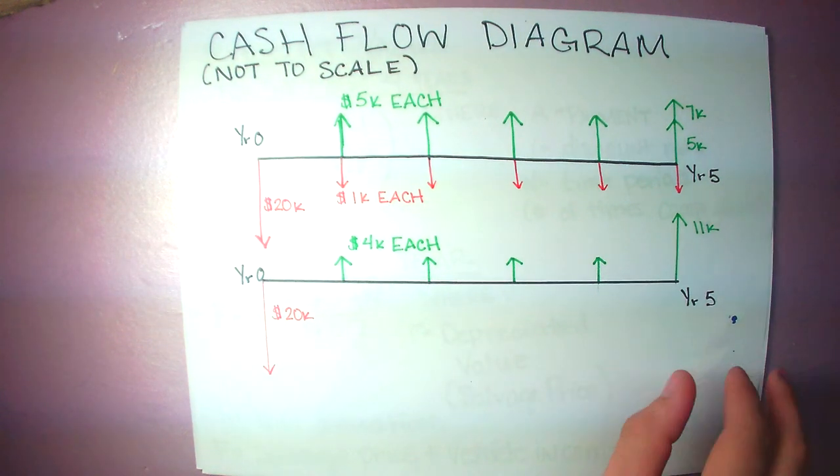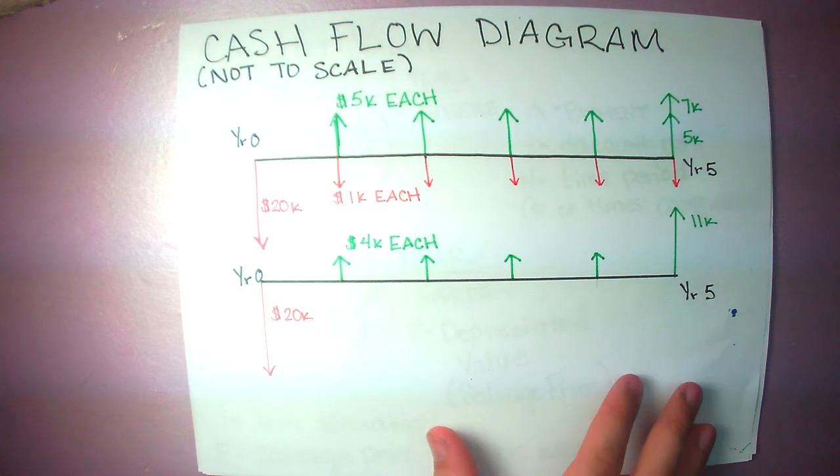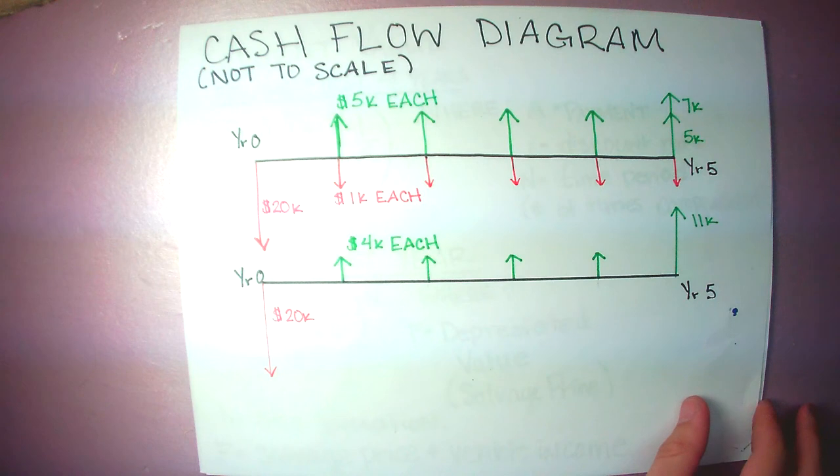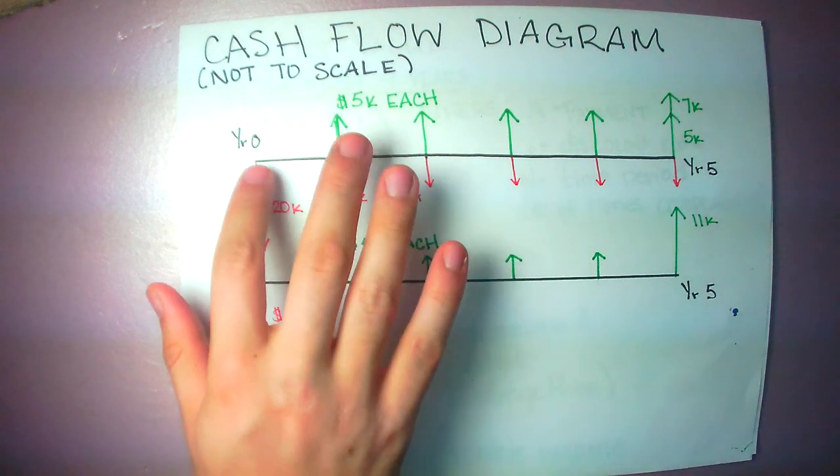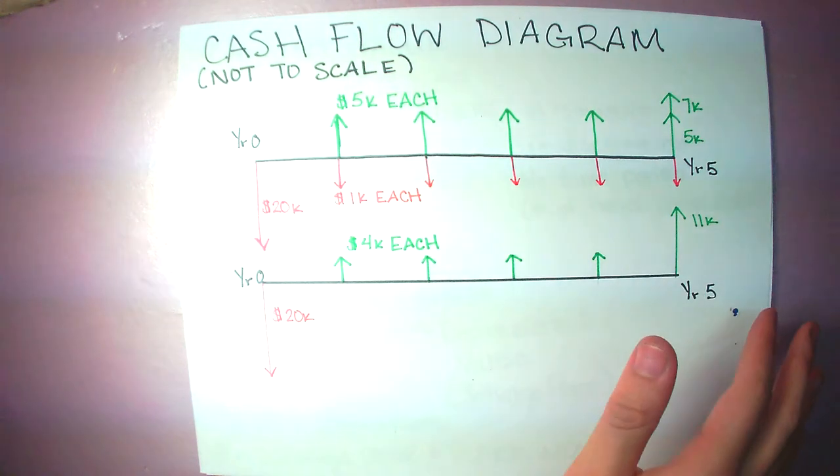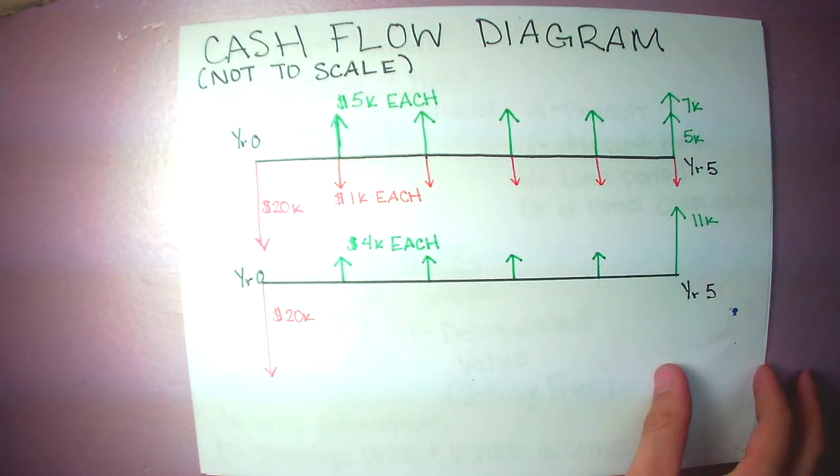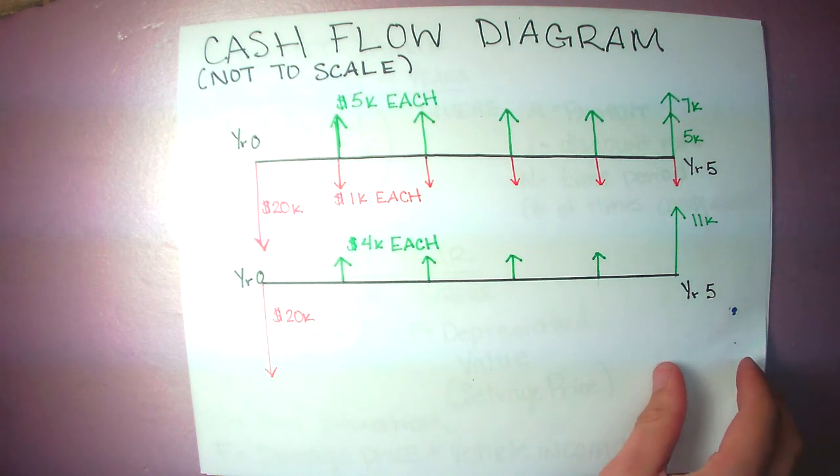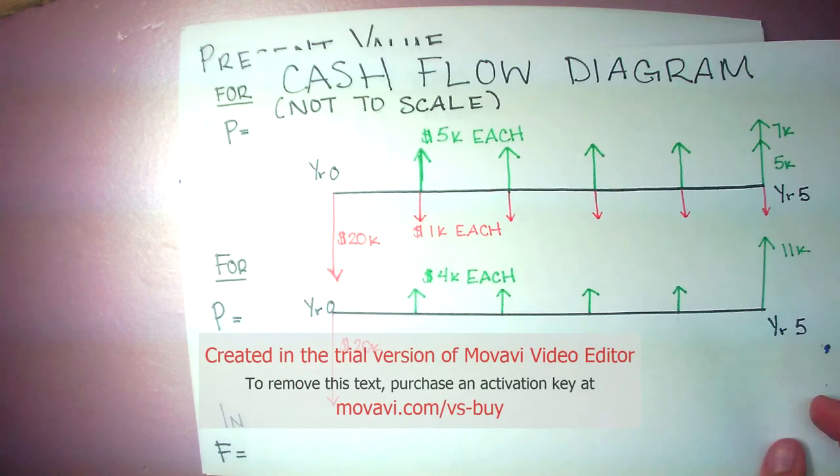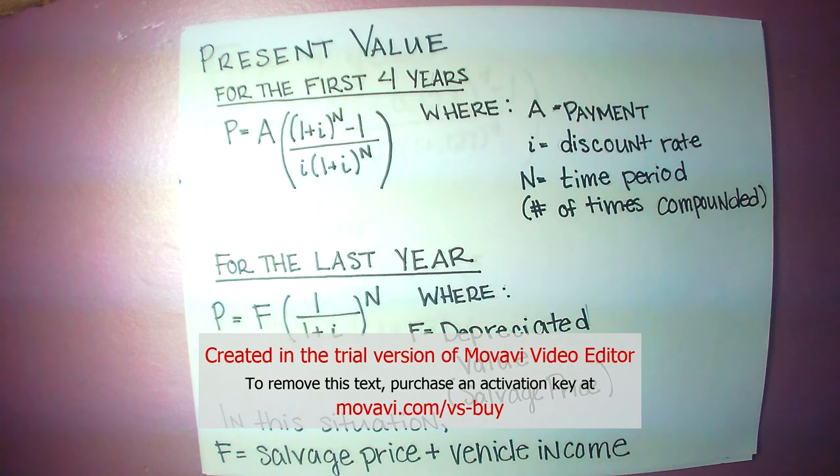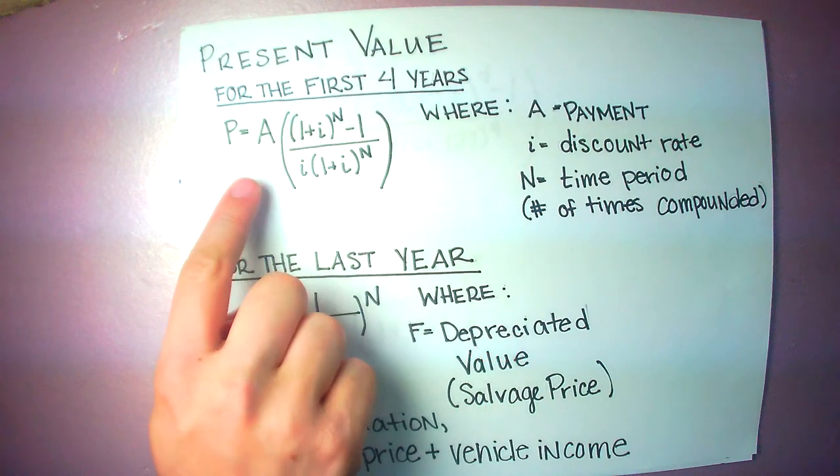What we can take from this data is the present value for every year of the device. Since we have a nice pattern for the first four years, we're able to use this equation.